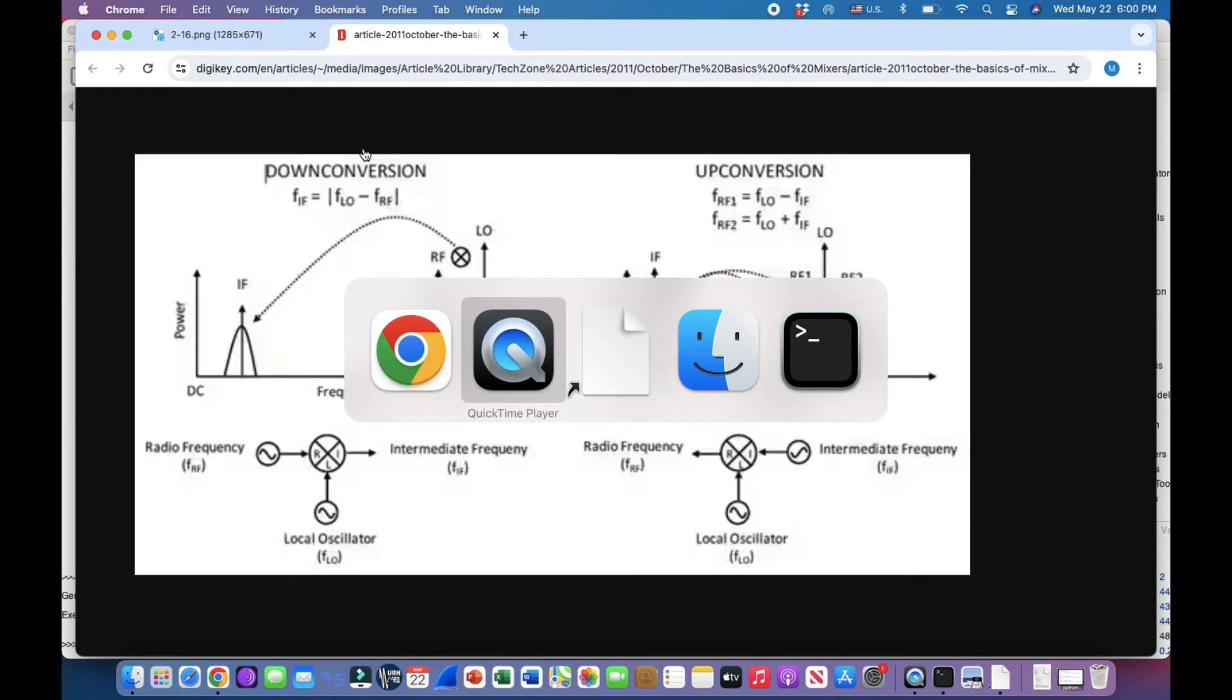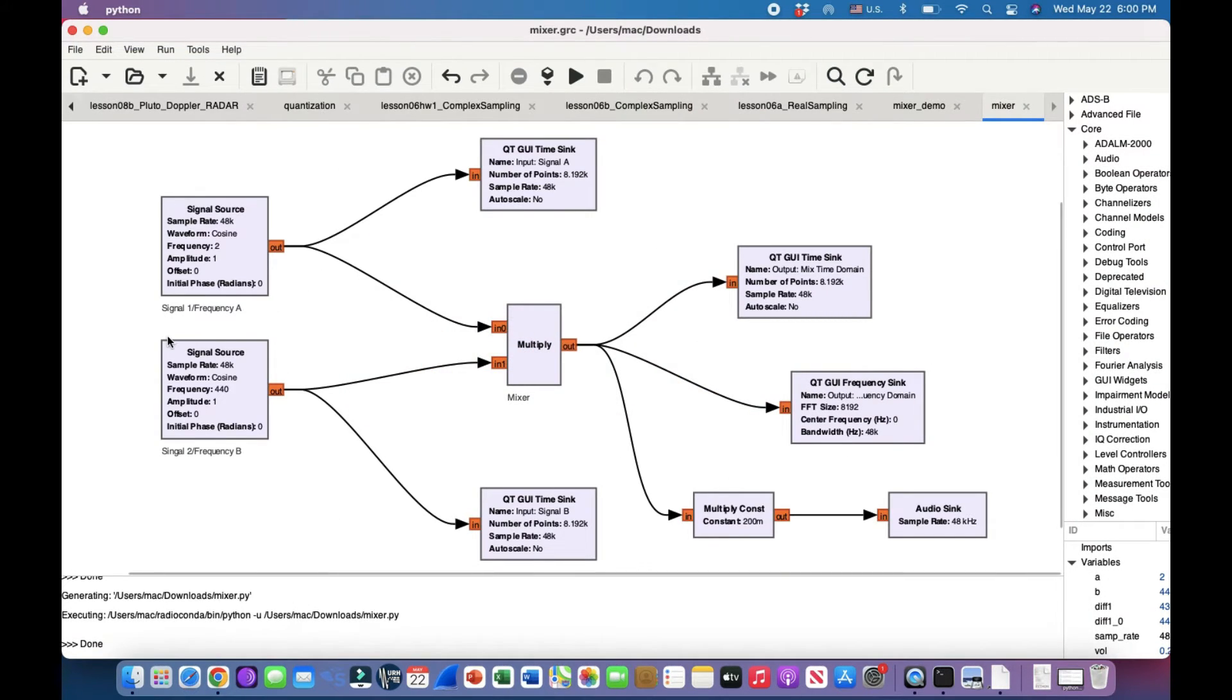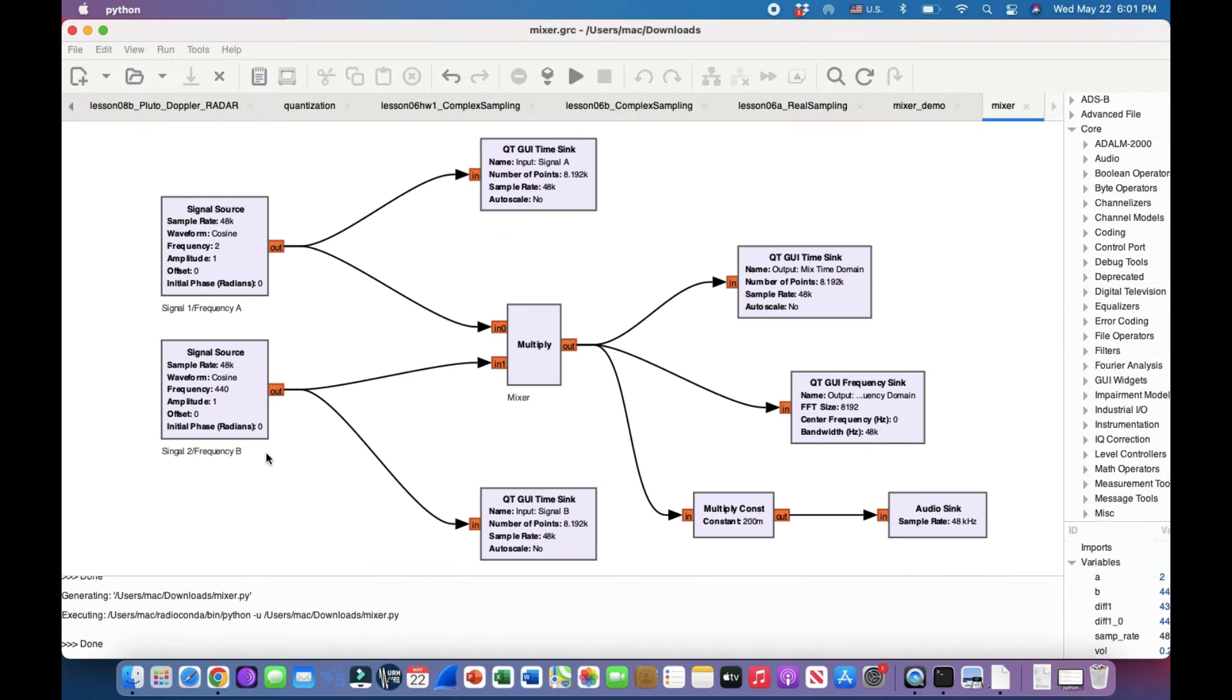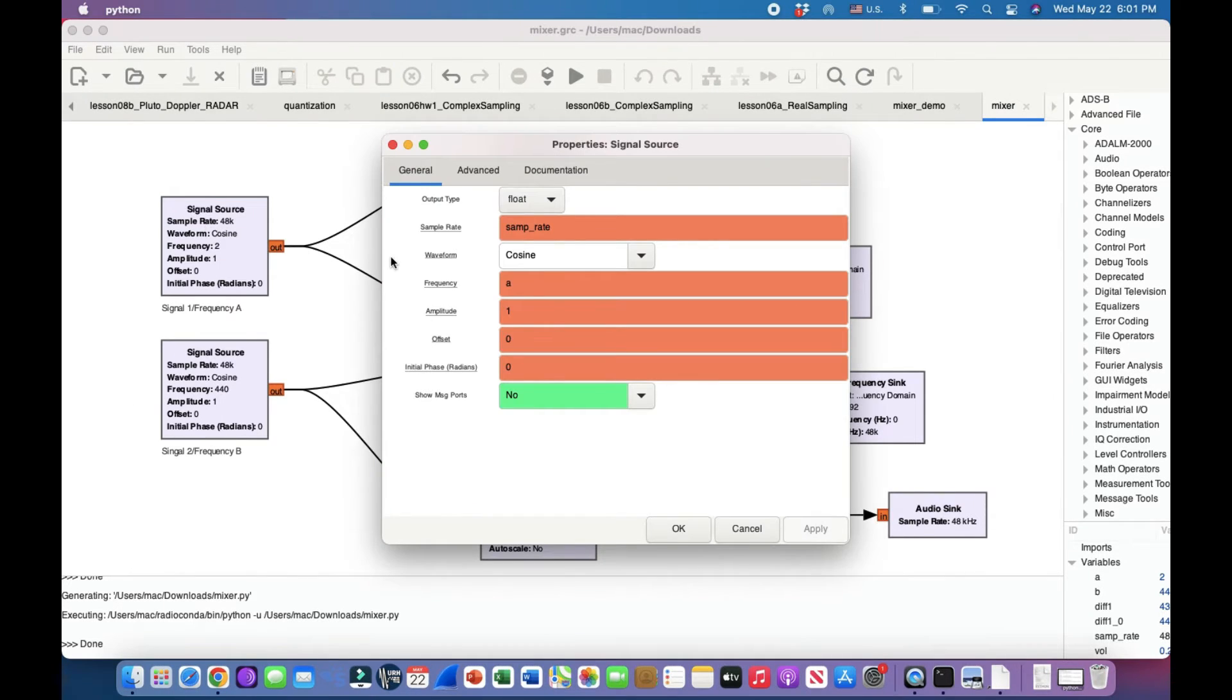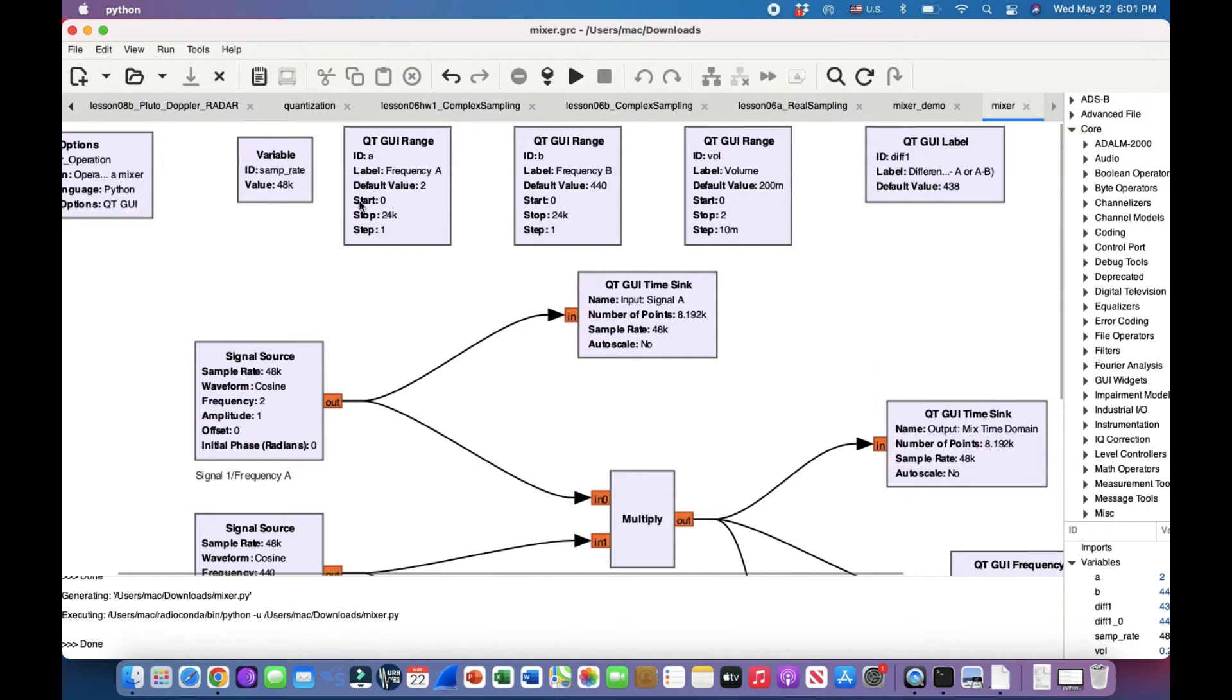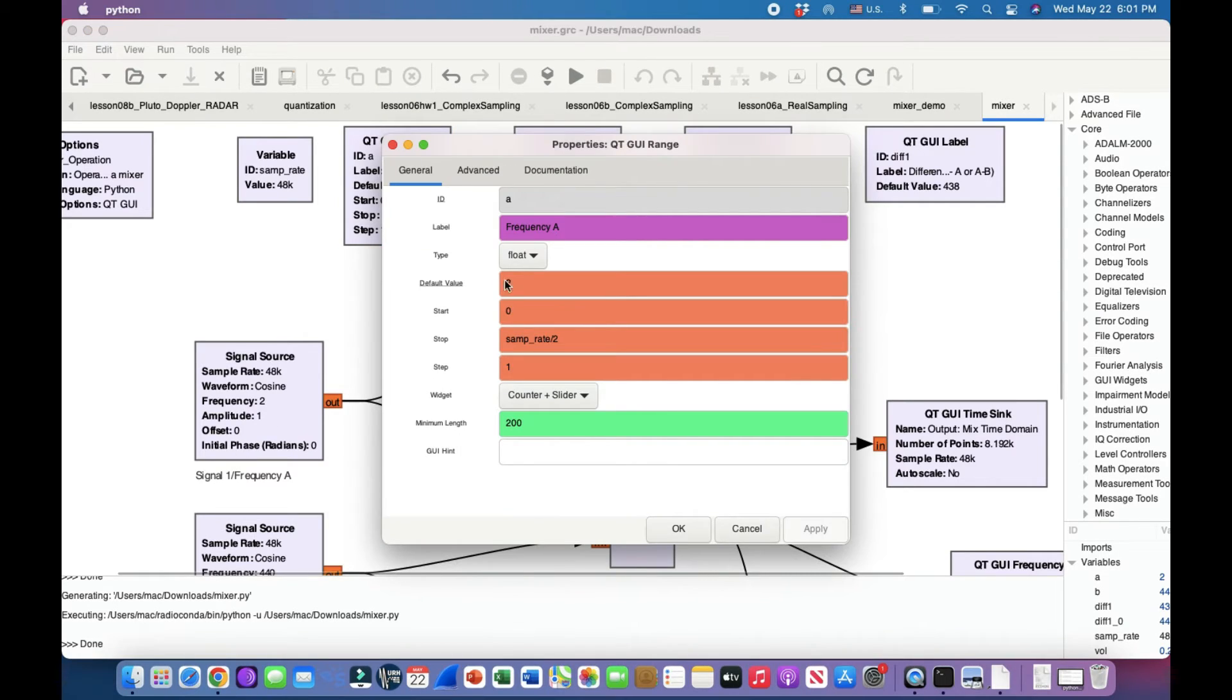For that we're going to look at our beautiful software called GNU Radio. I have two signals; we're mixing two signals together. We have a local oscillator signal and we have an FRF. So this FRF, think of it as frequency A, and frequency B is your local oscillator. The frequency here—both of these frequencies are controlled by a GUI slider. So the GUI sliders are there. This is called A; the default is 2 hertz, and you're going up all the way to sample rate divided by 2. Your sample rate is 2048 kilohertz, so you're going from 0 hertz all the way up to 24 kilohertz, and your default frequency is 2 hertz.